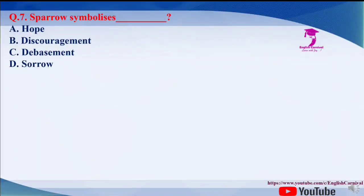Question number seven: the sparrow symbolizes what in this poem? Options are A. Hope, B. Discouragement, C. Debasement, and D. Sorrow. The correct answer of this question is C, that is debasement.